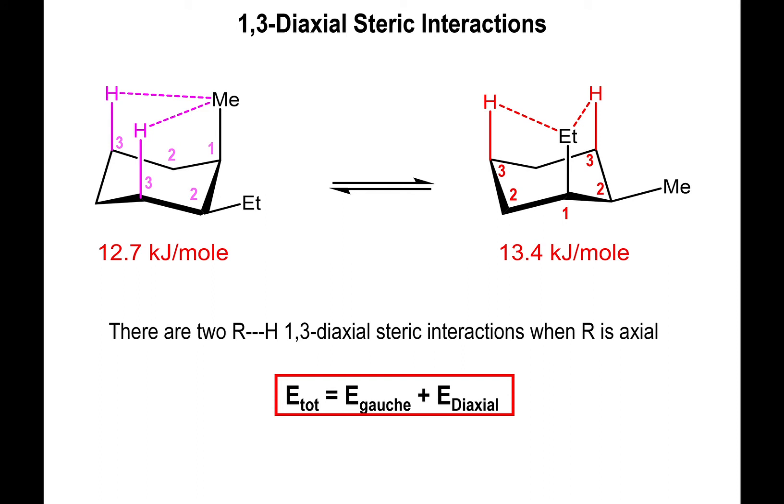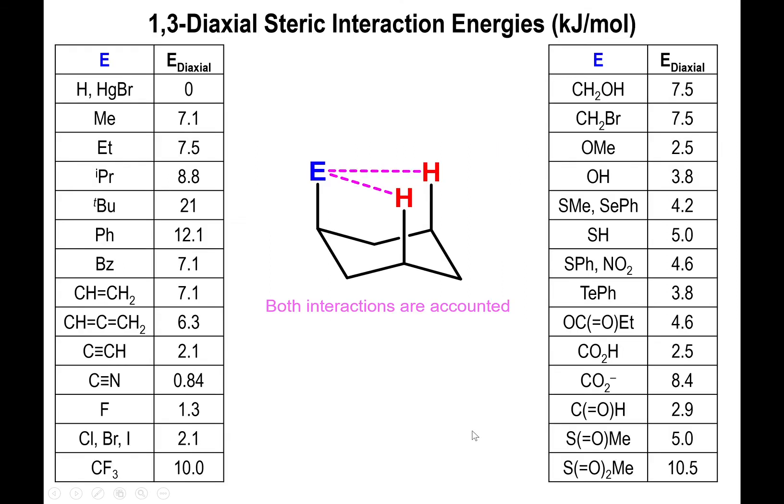So ultimately, to get the entire energy profile of the conformers, what you have to do is add the energy of the gauche interactions with the energy of the diaxial steric interactions. And the values for such interactions are given in the following tables. Now what I want to point out to you, so that you don't accidentally make a mistake in the future, is that the values that you see in these tables are already the values for two R-group hydrogen interactions. So if you only wanted to know how much a single methyl hydrogen interaction is, you will have to divide the value by two.